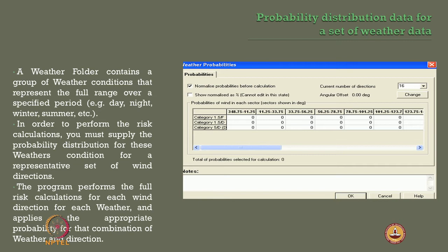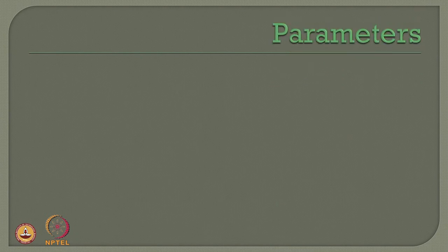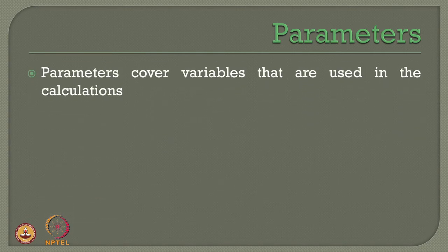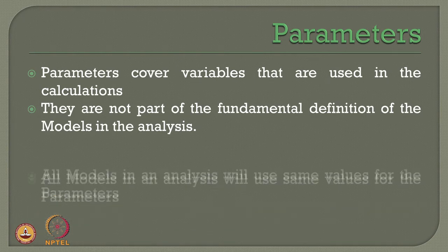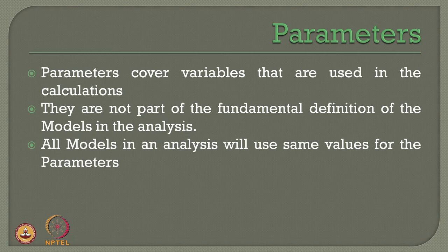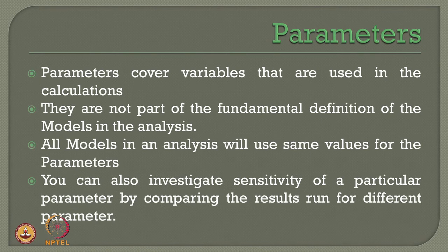The program then performs the full risk calculation for each wind direction for each weather condition, then applies the appropriate probability for that combination of weather condition and direction for calculating the risk results. During analysis, we must also give various other parameters as input data. Parameters cover variables used in the calculations in the software, and are not part of the fundamental definition of the models. All models in a given analysis will use the same values of parameters. One can also investigate the sensitivity of a particular parameter by running different results separately and comparing them to find the sensitivity index.